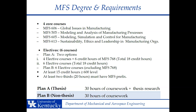Each of these options requires the four core courses. However, there is flexibility in how you choose to continue the rest of your coursework. For Plan A, there are two options: option one is four elective courses plus six credit hours of MFS 768, and option two is six elective courses, which is a total of 18 credit hours.